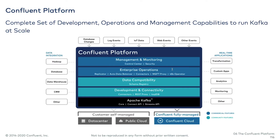Let's look at a layered diagram of what's in the platform. We have, of course, Apache Kafka as the foundation — that's the bottom layer. Then you've got Kafka Connect connectors in the next layer, labeled development and connectivity. There are a number of connectors that come with Confluent Platform that aren't available outside of it. ksqlDB is, of course, available for free — you don't need to be a Confluent Platform subscriber to use that — but proper platform support for ksqlDB is there as well.